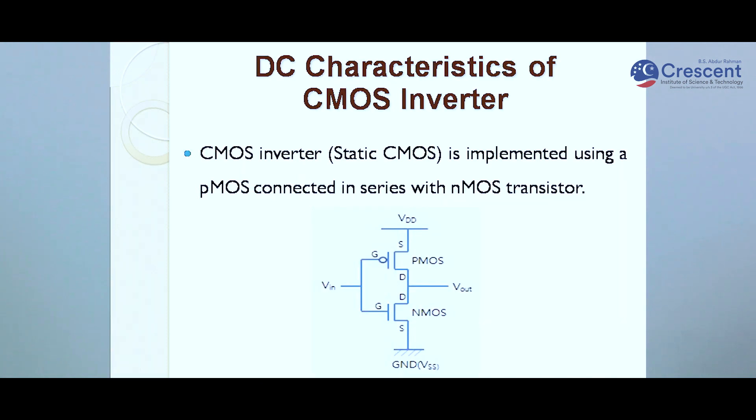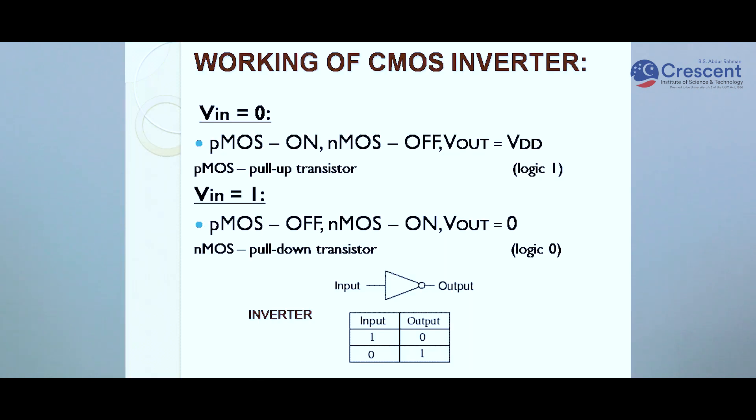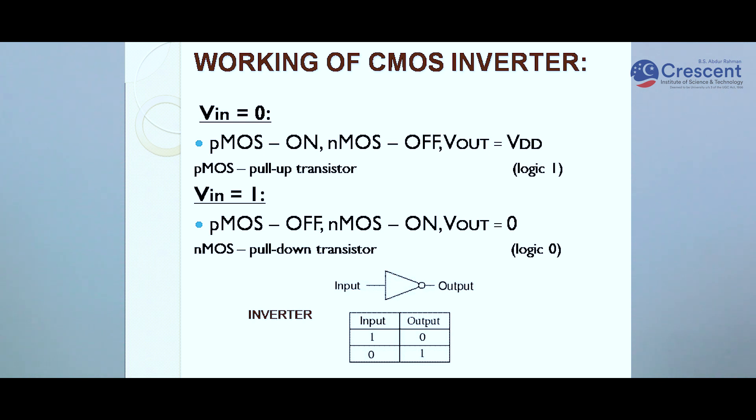To understand the DC characteristics of a CMOS inverter, we need to know how it works. It is called a CMOS inverter because it has the property of an inverter. CMOS is a combination of a PMOS transistor and an NMOS transistor connected in series. When VIN is zero, VOUT equals VDD. When VIN equals one, PMOS switches off, NMOS turns on, and VOUT equals logic zero.